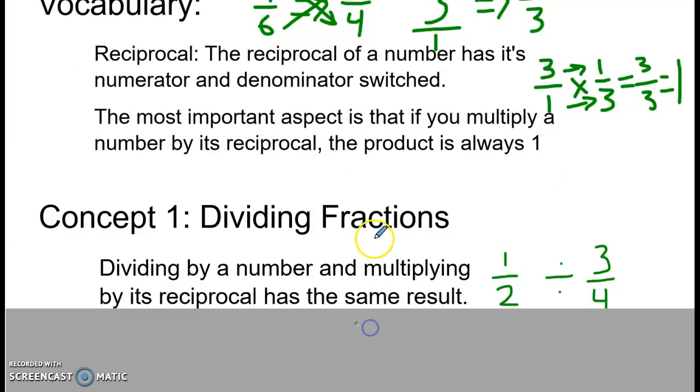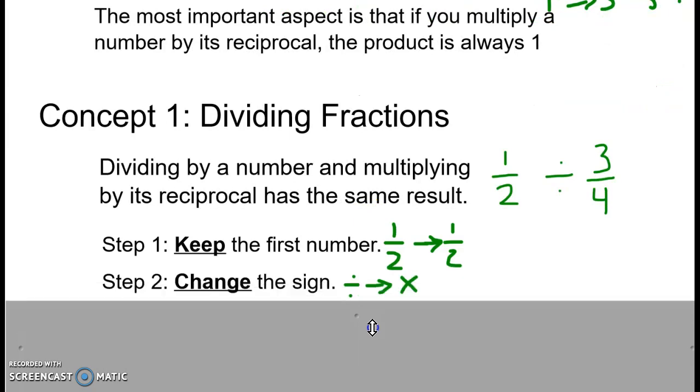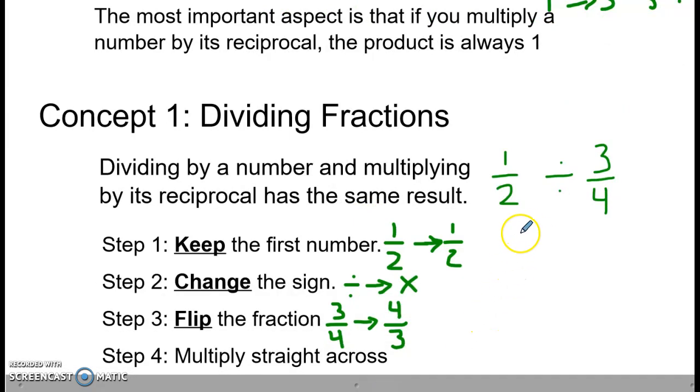The first concept we're looking at is dividing fractions. When we're dividing fractions, we're actually going to use a reciprocal to make the problem easy, because dividing fractions can get pretty complicated. But multiplying fractions, as we did up here, is pretty simple. So instead of dividing 1 half by 3 quarters, we're going to keep the first number the same, change the sign from division to multiplication, and then flip the fraction.